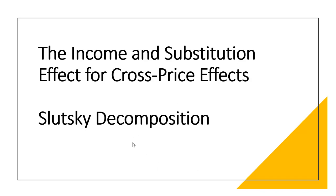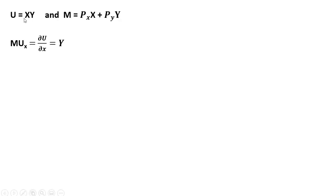Hello. In this video we're going to look at a Slutsky decomposition to look at the cross-price effects on the demand for good X. Here is our Cobb-Douglas utility function and the budget constraint. M is income. We've got the price of good X, price of good Y, units of X, and units of Y.